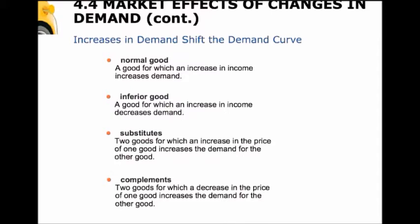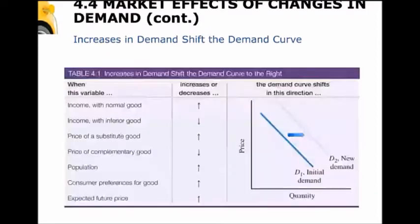If we look at pizza, something you would eat along with pizza might be salad, or drink with pizza — maybe lemonade — those would be complements. When income changes for a normal good it has one effect on demand; for an inferior good it has the opposite effect. The prices of substitutes and complements will affect the demand of other goods, so we can see lots of things interacting with the markets we're looking at.